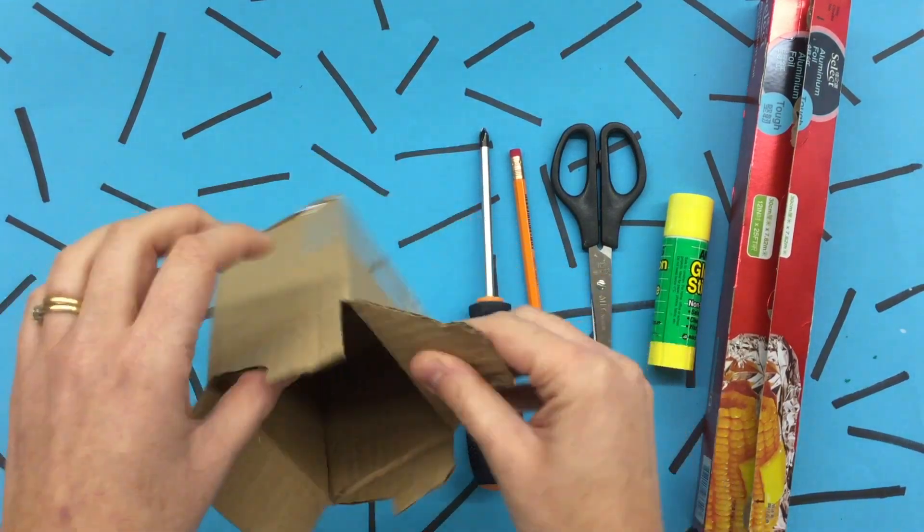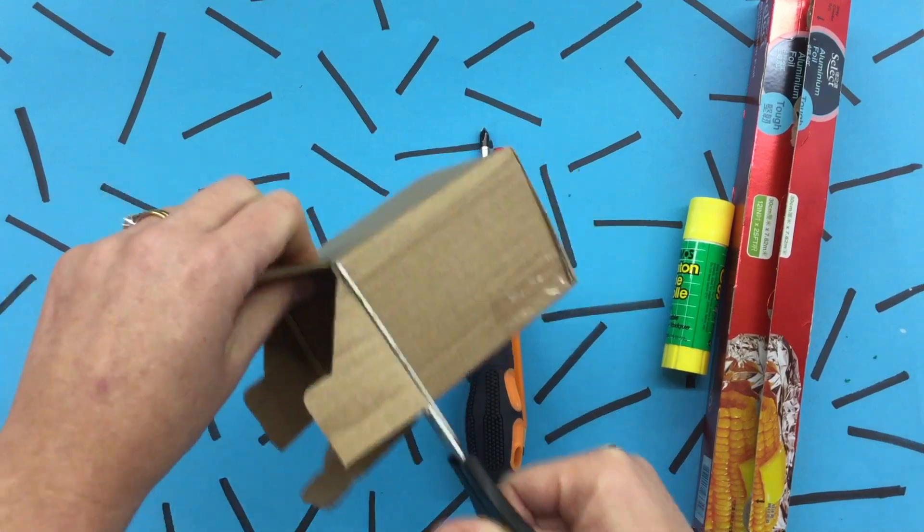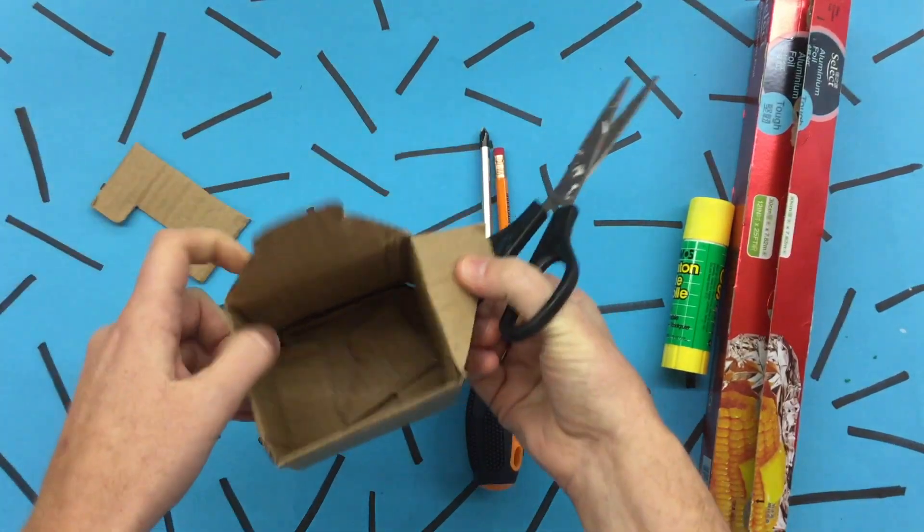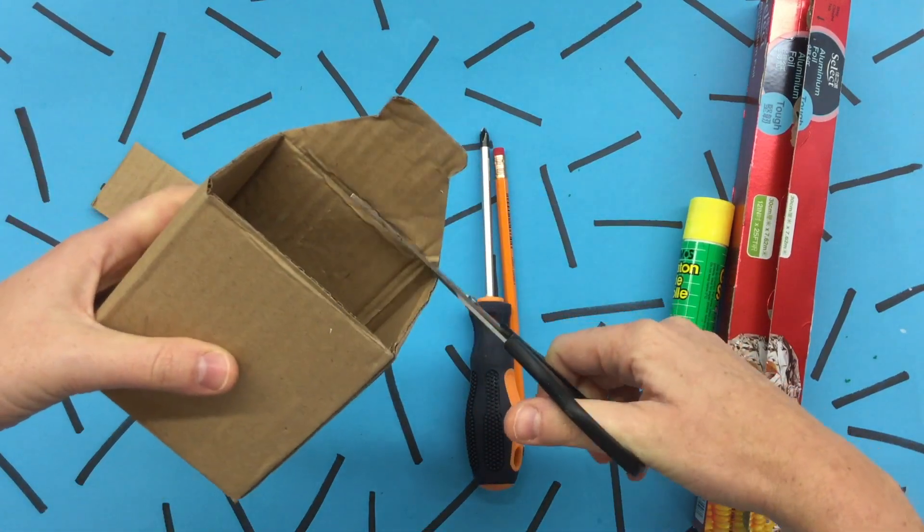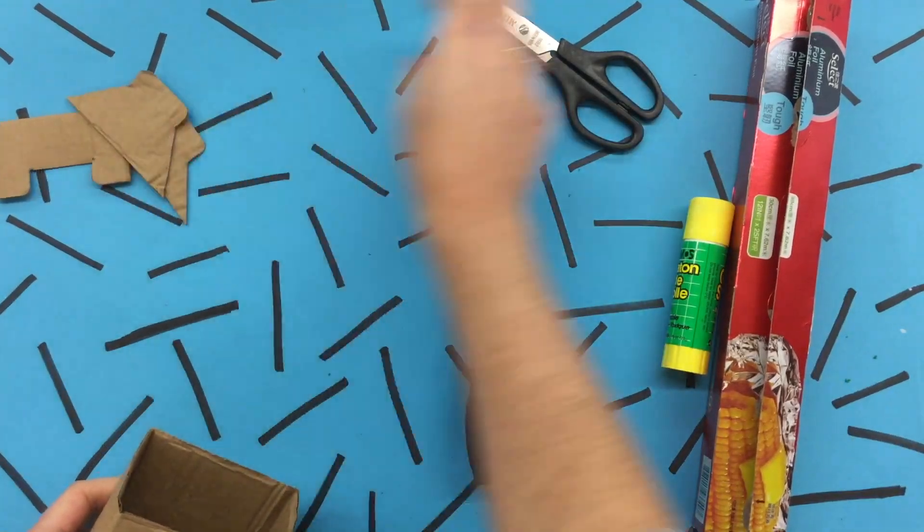Start by cutting the flaps off of your box. You can do that with the scissors. Depending on how big your box is this will take a little bit of time depending on the size and thickness. If you don't want it to go over your head you can keep the flaps on to make it a cube. It's up to you.